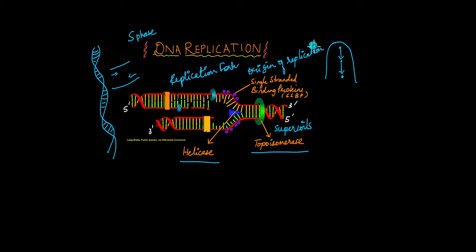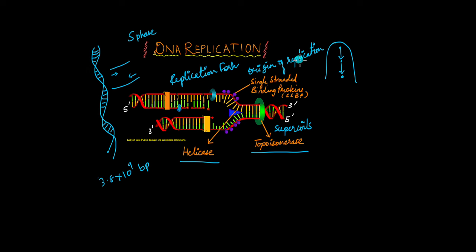Organisms like bacteria have a small circular DNA, so a few replication forks from a few origins of replication is enough to finish the entire replication process quickly. But for organisms like human beings, we have 3.8 × 10⁹ base pairs in our DNA. Having just one or two replication forks would mean it would take forever for our DNA to replicate. So we have multiple origins of replication and multiple replication forks opening up at different parts of the DNA simultaneously, so that different parts can be replicated at the same time.